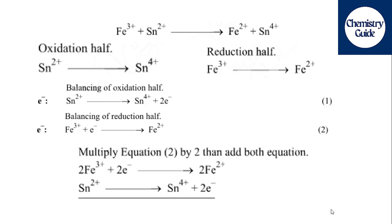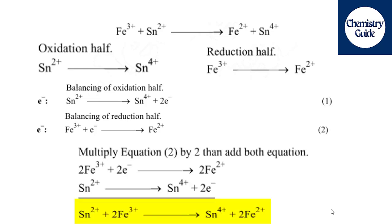The next step is to balance the two half-equations together. We multiply equation number two by two and equation number one by one. After multiplying, we add both equations together to get the final balanced redox equation.